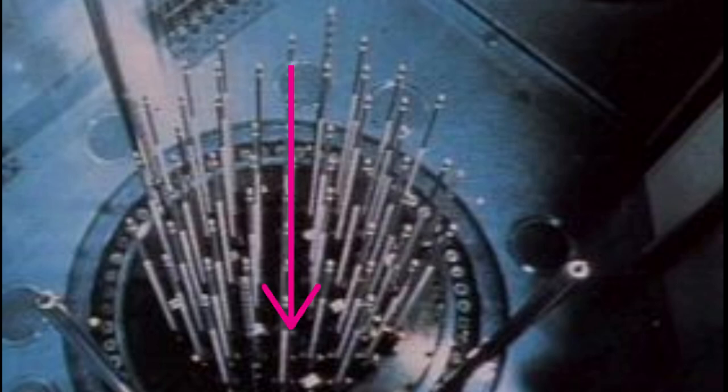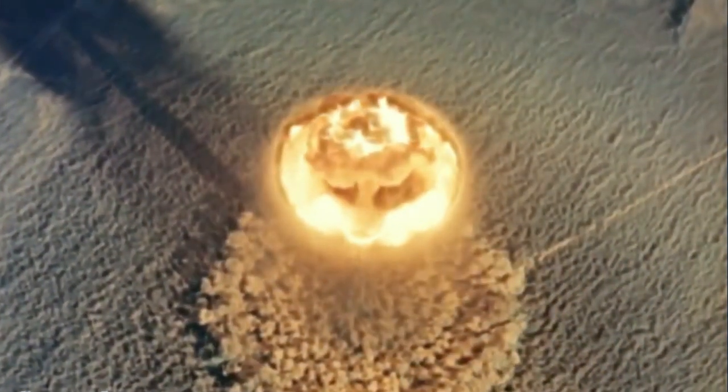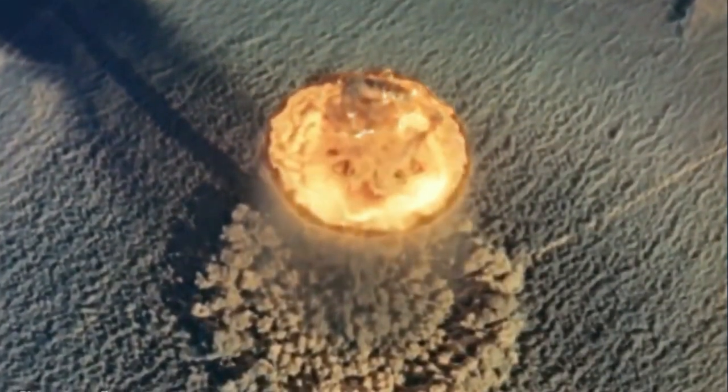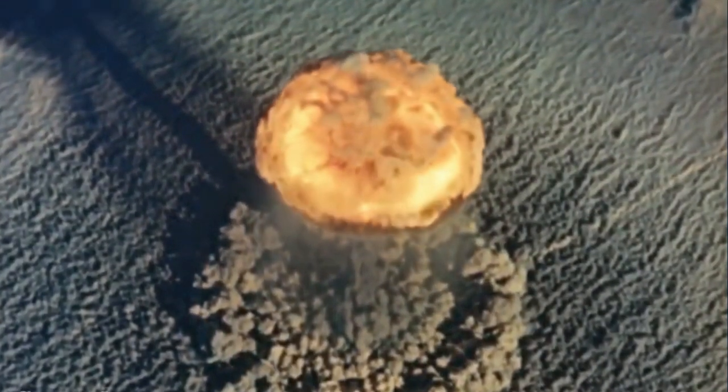The chain reaction is also what makes a nuclear weapon so dangerous. In an atomic weapon, there are no control rods. Once the chain reaction starts, there's nothing to slow it down, so the chain reaction makes the nuclear fuel get so hot so quickly that it explodes, releasing a great deal of radiation and the products of the fission reaction.